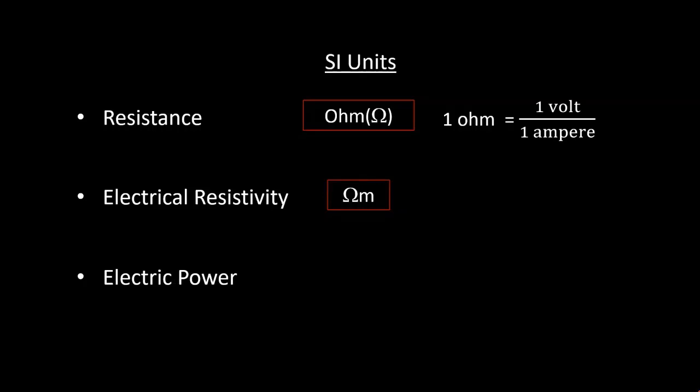The SI unit of electric power is watt. It is the power consumed by a device that carries 1 ampere of current when operated at a potential difference of 1 volt. Thus, 1 watt equals 1 volt into 1 ampere.